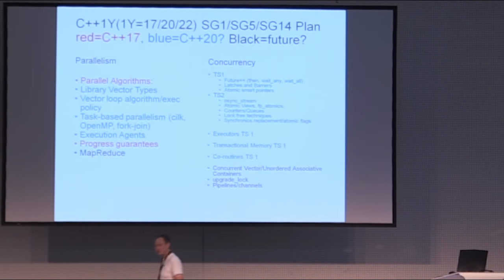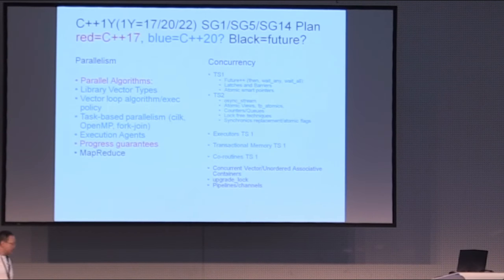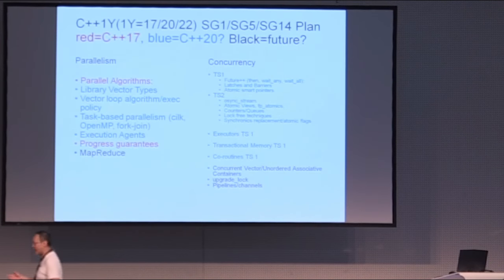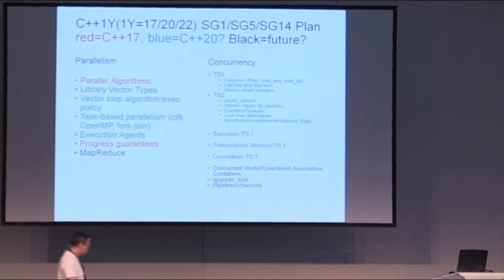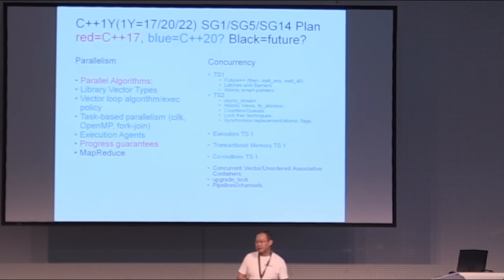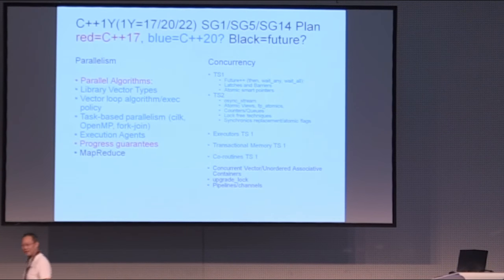There are things that the atomics in C++11/14 didn't cover. The atomics we have right now are limited to integral types, address types, and Boolean types. What about floating point atomics? The promise is that we're going to have a way to deal with floating point atomic types, as well as views on atomics, which means that if the type isn't really atomic, it will automatically serialize.